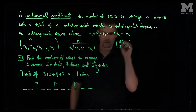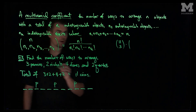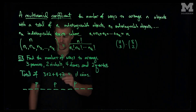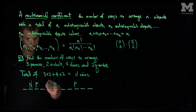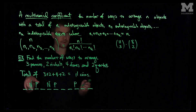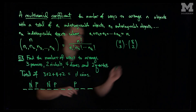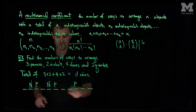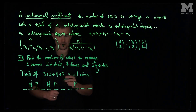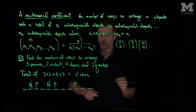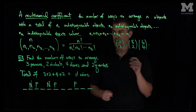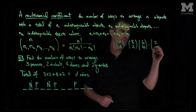Then we have 8 slots remaining. From those 8 slots, there are 8 choose 2 ways to place the nickels. After placing the nickels, 6 slots remain. From those 6 slots, we choose 4 for the dimes, giving 6 choose 4. Finally, 2 slots remain for the 2 quarters, giving 2 choose 2.